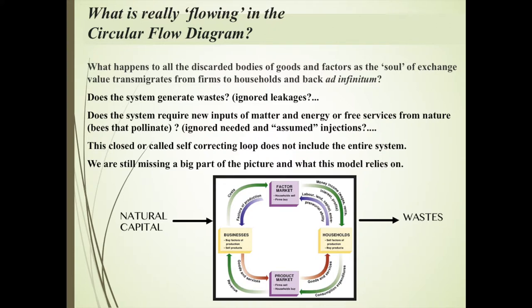What is fundamentally at issue centers around what is really flowing in the circular flow diagram and what it ignores. Because the pre-analytic vision of traditional economics models the economy as an isolated system, the flow must really be called abstract exchange value. When goods arrive to the households, the exchange value jumps out of its embodiment in goods and takes on the body of factors for its return trip to the firms, whereupon it becomes goods again. The entire focus is on exchange value. The system does not address, at the macro level, the wastes or leakages that accumulate as goods and services are consumed as we make the rounds in this ad infinitum circle.